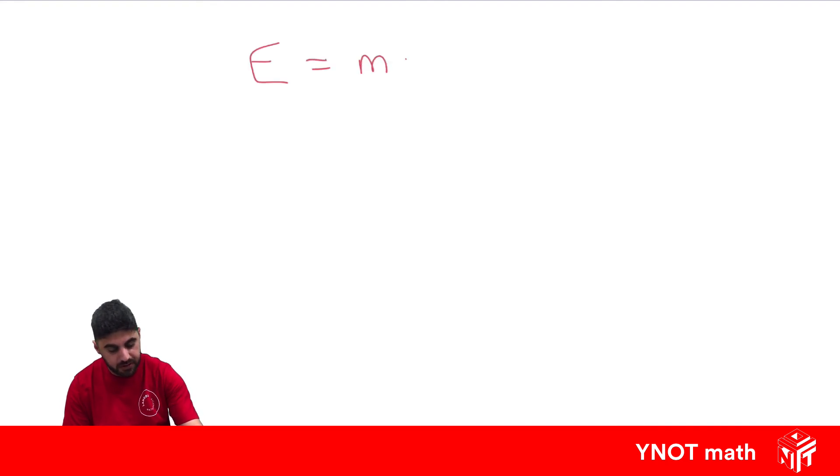that E equals mc squared. So, this is essentially just algebra where E is representing a number that we just don't know, m is representing a number we don't know, and c is also representing a number we don't know. In this case, E is for energy, m is for mass, and c is actually the speed of light.